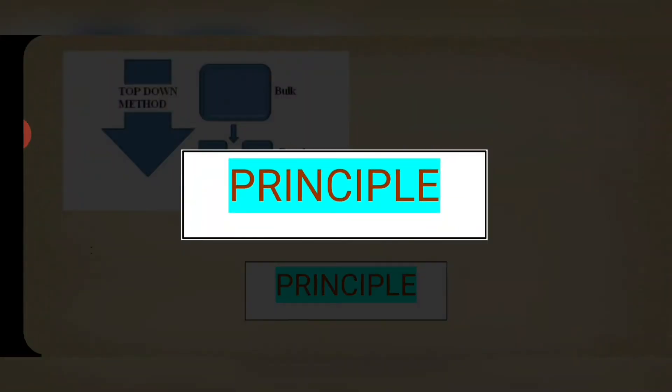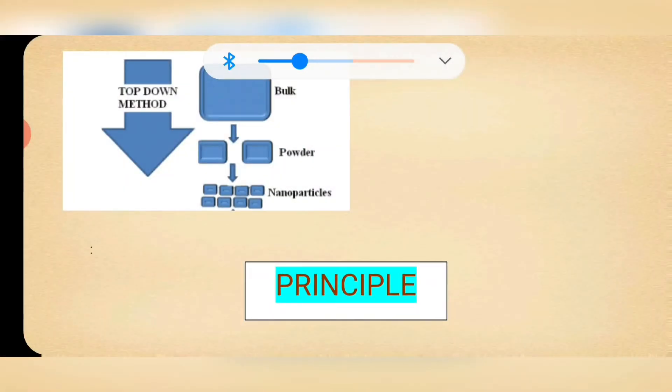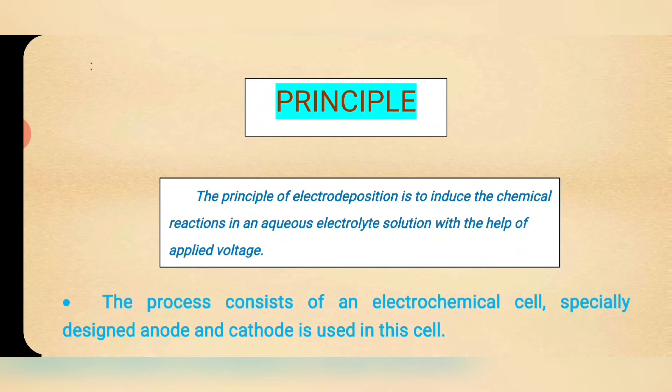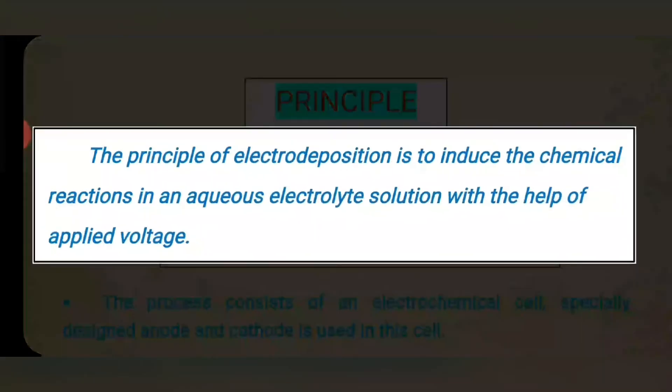Before going into the process, first we know the principle. The principle of electro-deposition is to induce the chemical reactions in an aqueous electrolyte solution with the help of applied voltage.